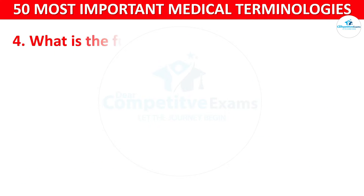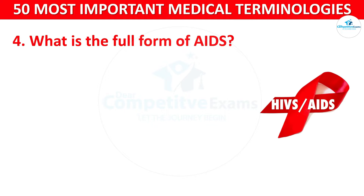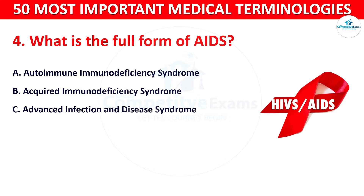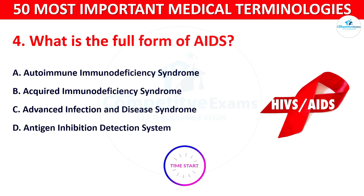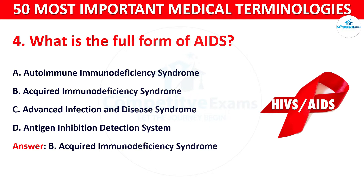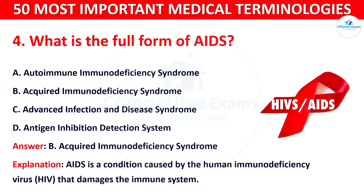Question number 4: What is the full form of AIDS? Your options are: A) Autoimmune Immunodeficiency Syndrome, B) Acquired Immunodeficiency Syndrome, C) Advanced Infection and Disease Syndrome, or D) Antigen Inhibition Detection System. The correct answer is B, Acquired Immunodeficiency Syndrome. AIDS is a condition caused by the Human Immunodeficiency Virus (HIV) that damages the immune system.